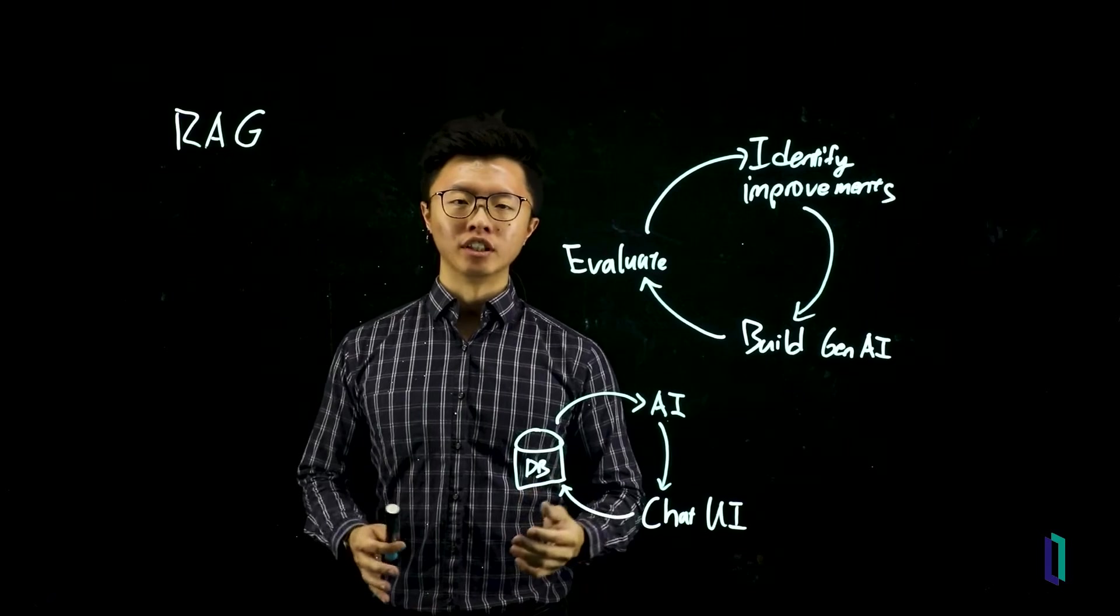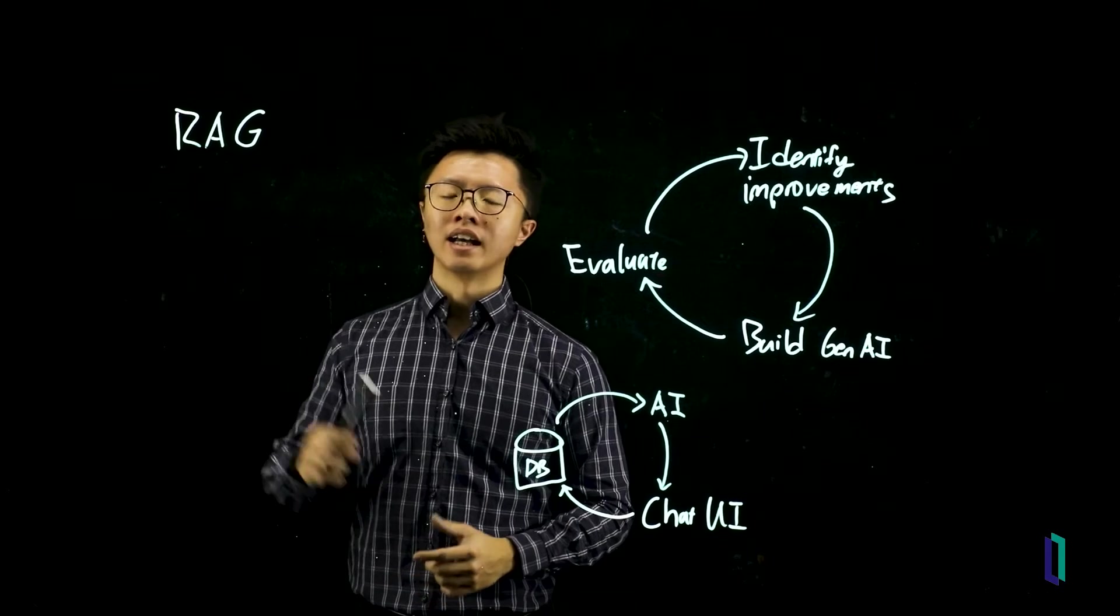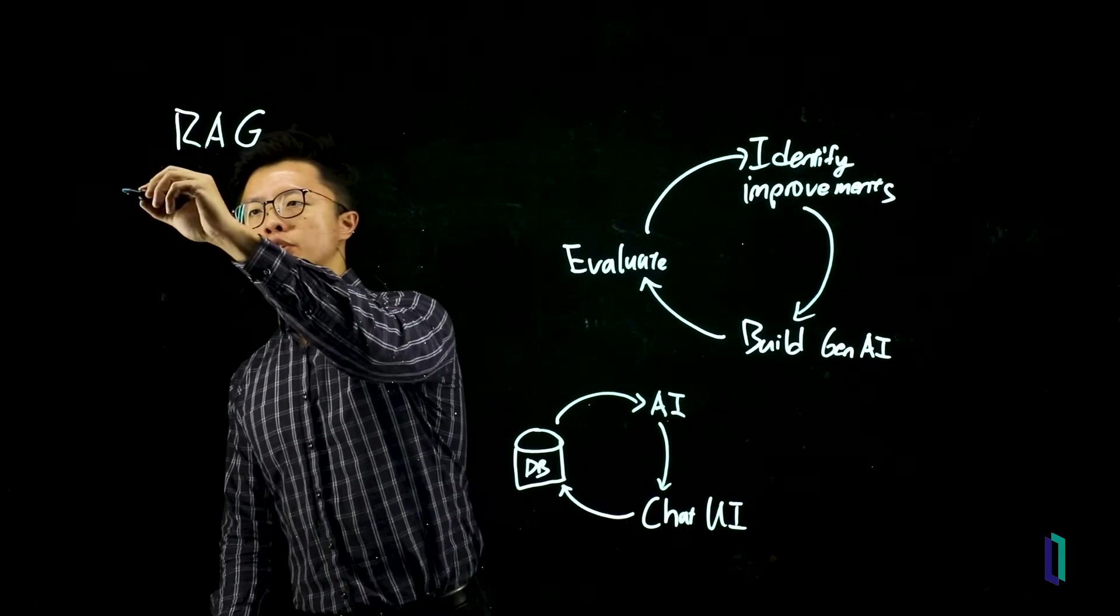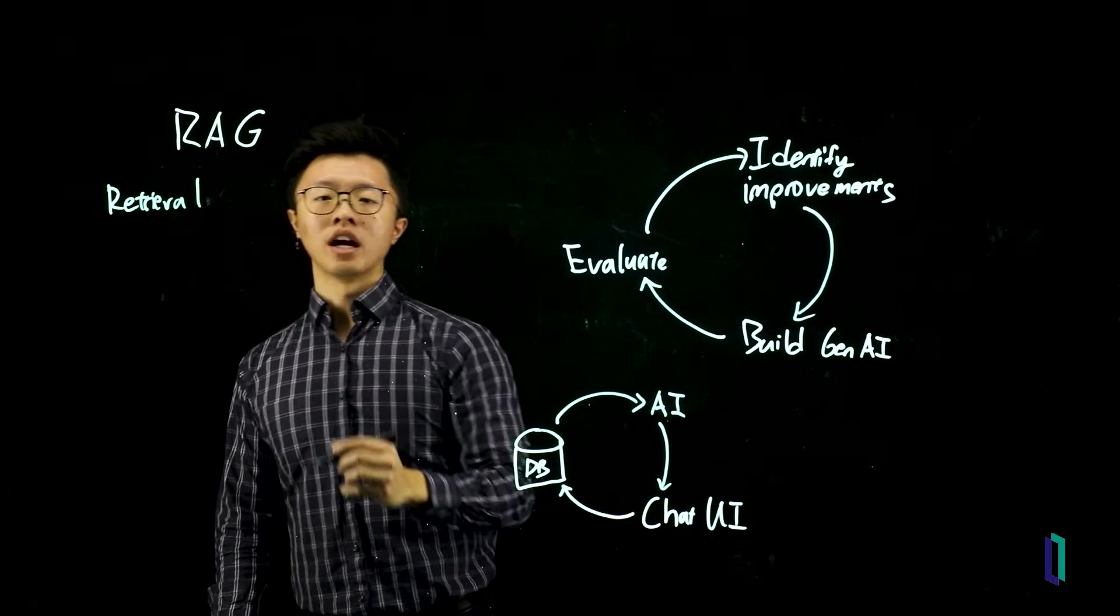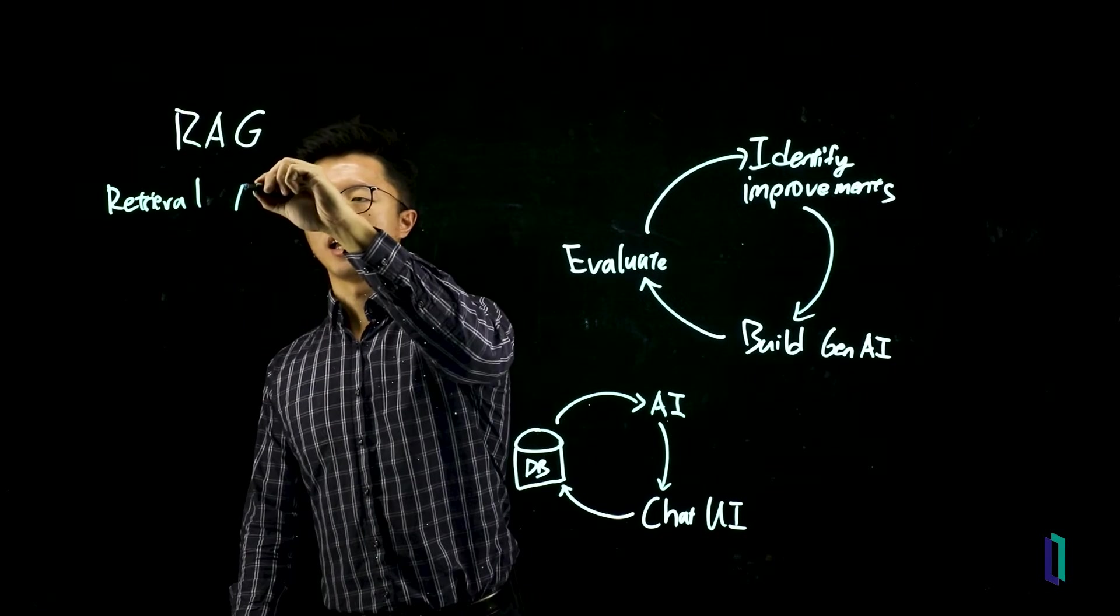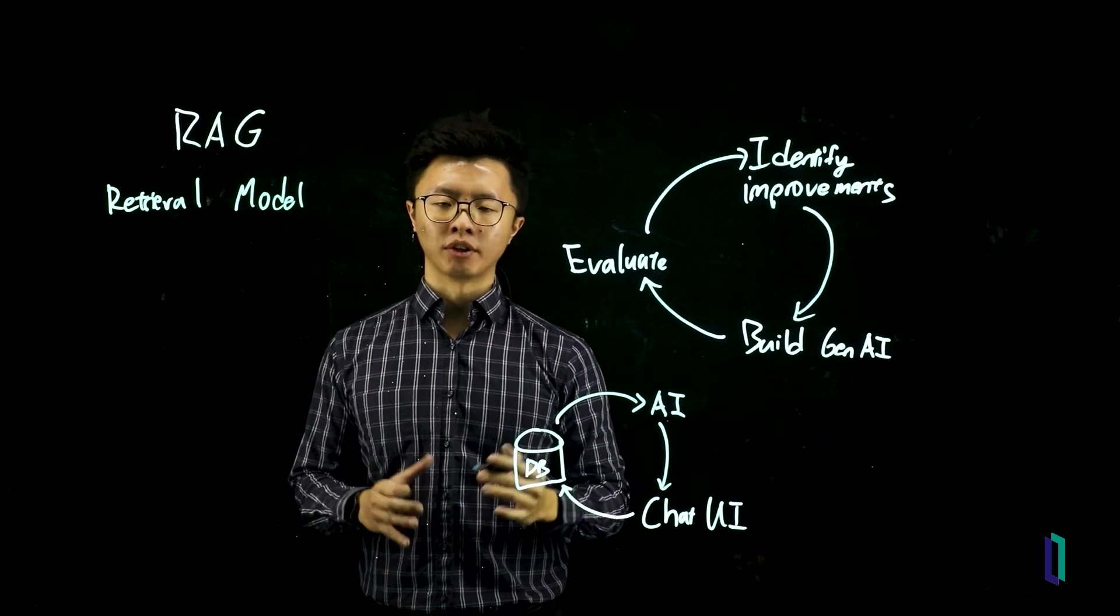Now that we've covered evaluations, let's take a look at how to improve your Gen AI system. So RAG has two main components to it. You have your retrieval. And you have the large language model itself. And it's important to understand where your issues are coming from.